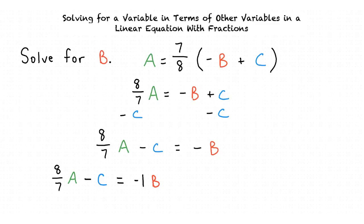According to the distributive property we must multiply 8 sevenths a and negative c by negative 1. The final result is b equals negative 8 sevenths a plus c.